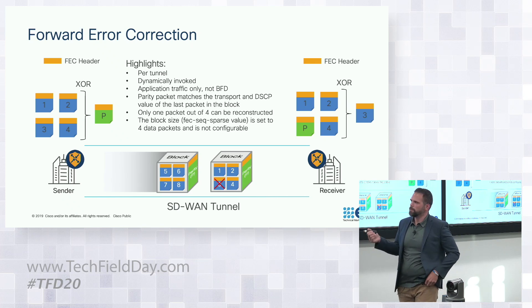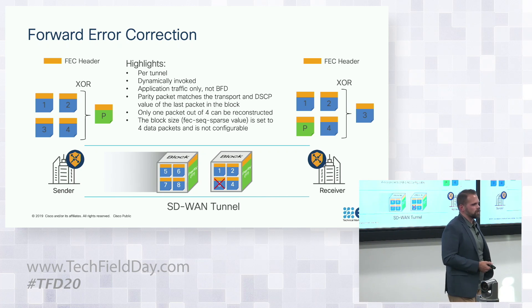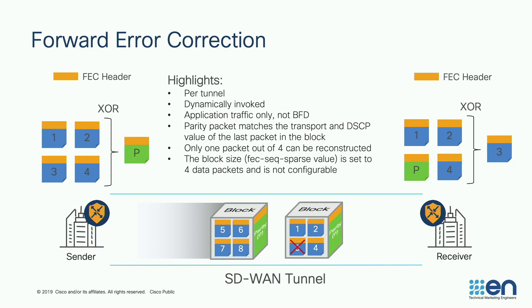FEC, or forward error correction, is essentially stealing a page from the storage guy's playbook. Just like RAID 5 with three hard drives, we group packets into blocks of four packets. There's a fifth packet — a parity packet — and if one of my packets gets lost crossing the WAN, I can use that parity packet to recover that lost data. Just like RAID can recover a lost hard drive, FEC can recover a lost packet.